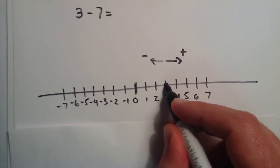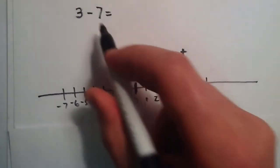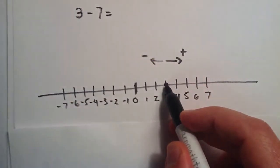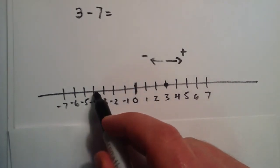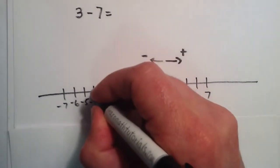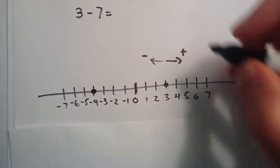And we're subtracting 7. So we start at 3, because that's the number here. And then we take away 7: 1, 2, 3, 4, 5, 6, 7. And it brings us to negative 4.